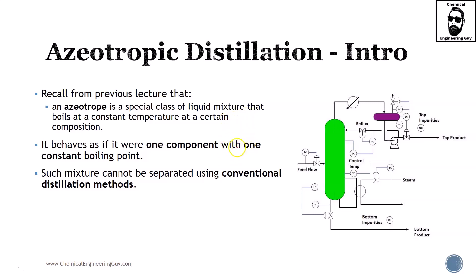Recall from previous lectures that we have been talking about azeotropes. An azeotrope is a special class of liquid mixture — we're still talking about at least two components — that boils at a constant temperature at a certain composition of A and B. It behaves technically as if it were a new component, A-B, with one constant boiling point.